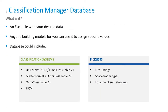Examples of pick lists include fire ratings, space and room types — maybe you have your own standard way of categorizing rooms beyond FICM. A big one every owner should have is a list of equipment subcategories. Revit has family categories like mechanical equipment or electrical equipment, but it doesn't go below that — a boiler, a chiller, a pump, and an air handling unit are all 'mechanical equipment' to Revit. But your O&M systems break it down into boiler, chiller, AHU, VAV box, etc.